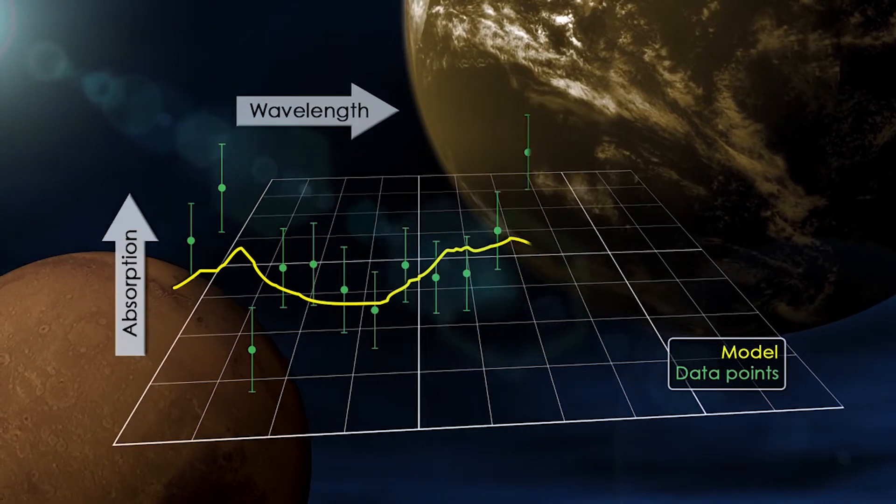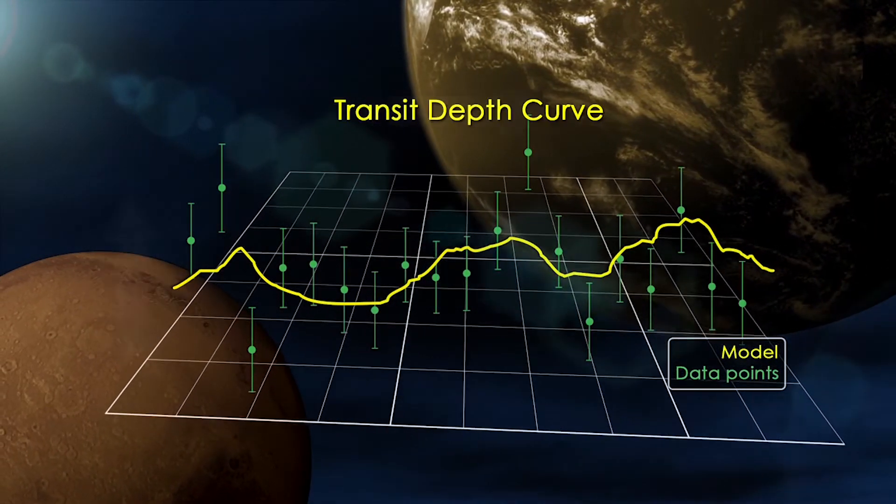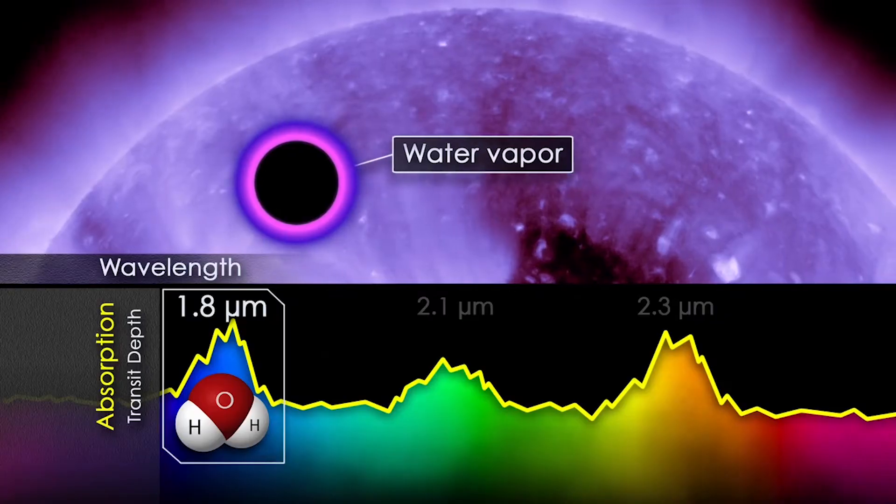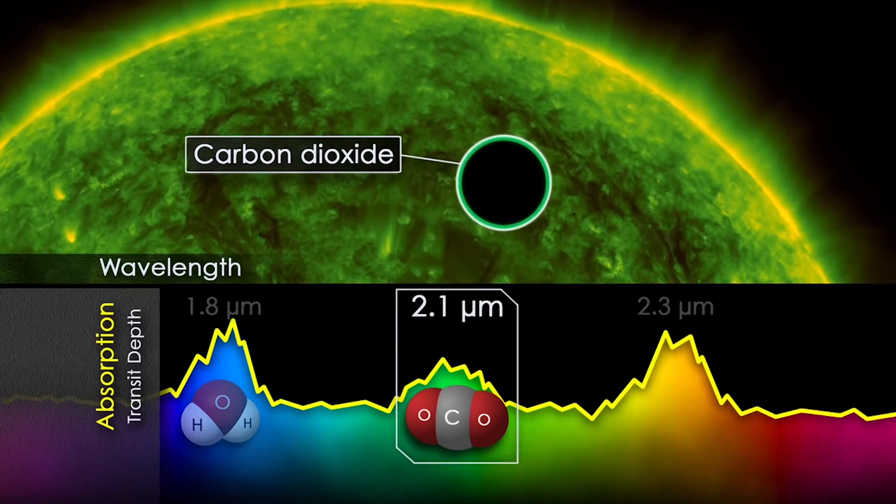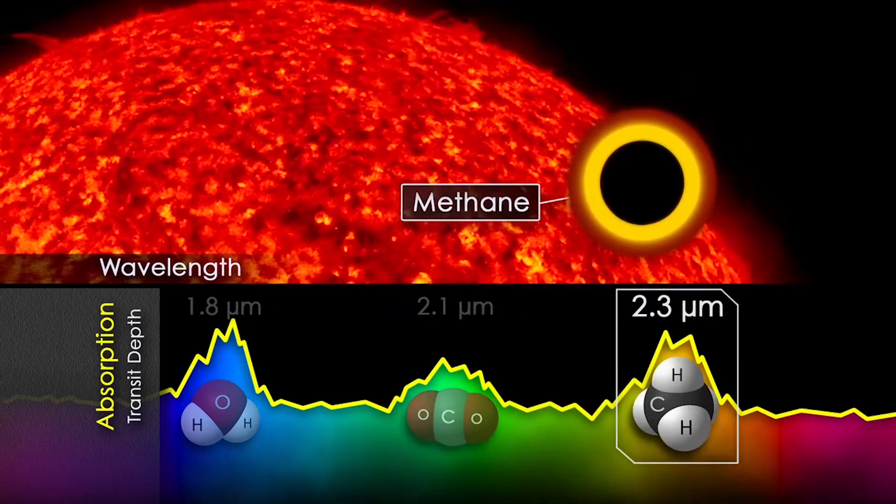Measuring the depth of absorption at each wavelength gives astronomers the planet's transit depth curve, which allows them to model the composition, height, and density of the atmosphere, providing a detailed picture of the planet.